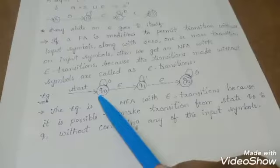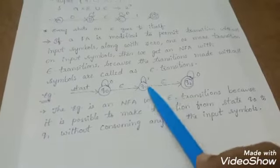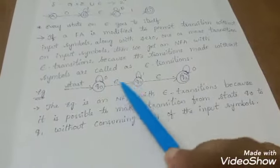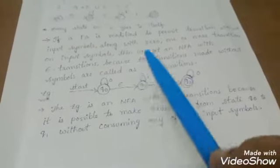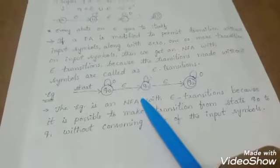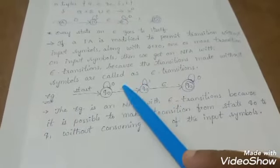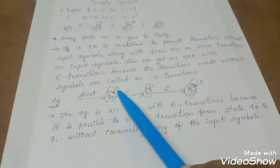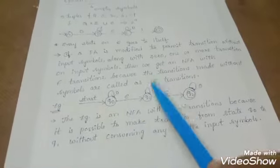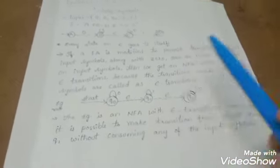We are able to make transition from Q naught to Q1 and Q1 to Q2, but here we are not using any input symbols. Just we are taking the input symbol as epsilon. Epsilon indicates empty symbol, so with epsilon we are able to make the transition. That type of transitions is known as epsilon NFA.